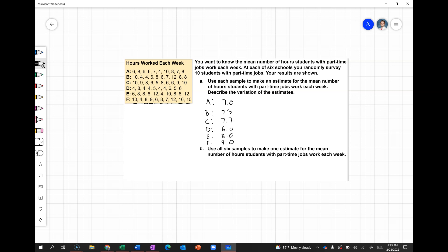So this now says use each sample to make an estimate for the mean number of hours students with part-time jobs work each week. And then describe the variation of the estimates. So we've got multiple means here. If we wanted to then find our average of these means, you could take all of these and add them together. So you'd have 7.0 + 7.3 + 7.7 + 6.0 + 8.0 + 9.0, that's 45, and that's a total of 6 schools. We get 7.5.